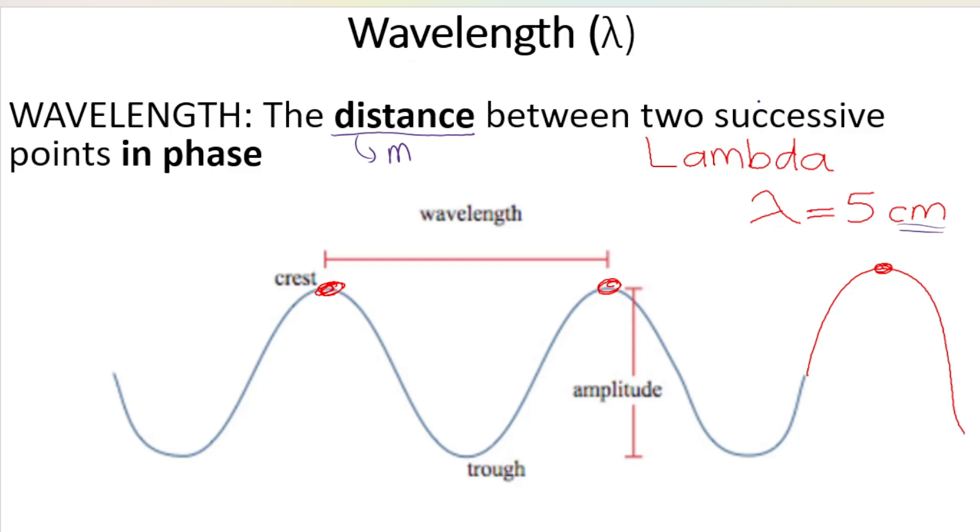To break down that definition, successive means one after the other and points in phase is a concept I'm going to explain in more detail in a second. But the first thing I want you to understand is that the symbol for wavelength is this funny symbol over here. Let me show you how I draw it. You draw a little squiggly line like that and a little diagonal line like that. So that symbol is called lambda. I just wrote it there, I spelt it out for you, but that is the symbol for wavelength.